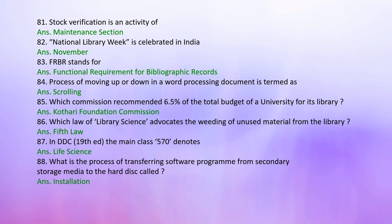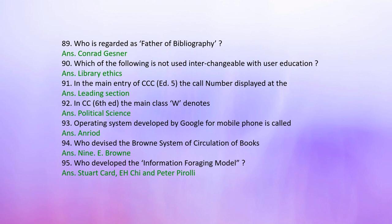Question 84: The process of moving up or down in a word processing document is termed — Answer: Scrolling. Question 85: Which commission recommended 6.5% of total budget of a university for its library? Answer: Kothari/Education Commission. Question 86: Which law of library science advocates weeding out unused material from the library? Answer: Fifth law. Question 87: In DDC 19th edition, main class 570 denotes — Answer: Life Science. Question 88: What is the process of transferring a software program from secondary storage media to the hard disk called? Answer: Installation. Question 89: Who is regarded as father of bibliography? Answer: Conrad Gessner.